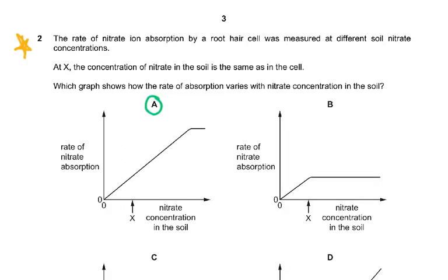Question two has a comment in the examiner's report. It says the interpretation of the graphs proved challenging — candidates had to appreciate that nitrates are absorbed actively and so they will be absorbed when their concentration is lower or higher in the soil than in the plant roots.